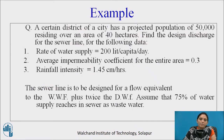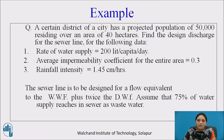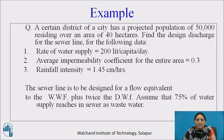Example: A certain district of a city has a projected population of 50,000 residents over an area of 40 hectares. Find the design discharge for the sewer line given: rate of water supply = 200 liters per capita per day; average impermeability coefficient for the entire area = 0.3; rainfall intensity = 1.45 cm per hour. The sewer line is to be designed for a flow equivalent to wet weather flow plus twice the dry weather flow. Assume 75% of water supply reaches the sewer as wastewater.